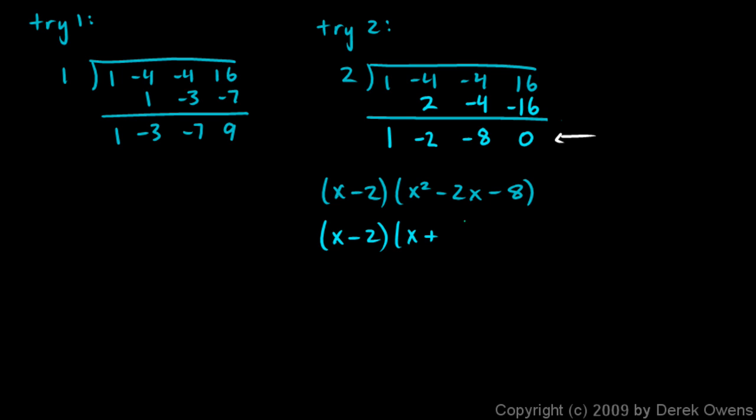And that quadratic actually isn't too hard to factor. We're going to need x plus something and x minus something, because this 8 here is negative. And so what works there? It looks like x plus 2, x minus 4 will work, because that certainly gives us an x squared. And then the outer and inner gives us a minus 4x plus 2x. So that works. And then the 2 times negative 4 gives us negative 8. So we've got it. We factored this, and we found our original factor using the rational zeros theorem.